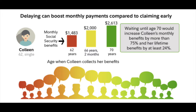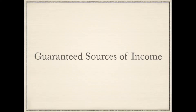For example, just by waiting 10 years on tapping into your social security benefits, you can double your monthly benefits paid out to you. Planning out your guaranteed sources of income and assuring they cover your essential expenses is an excellent plan to achieve a fruitful and relaxing retirement.